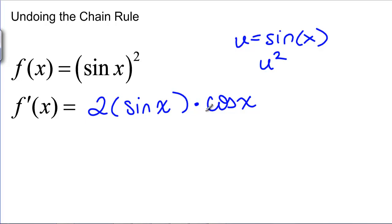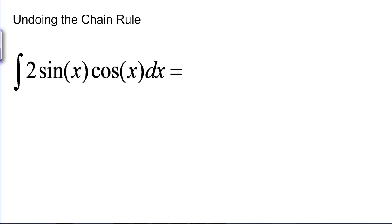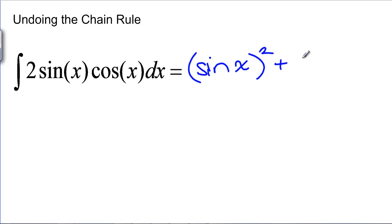We can write this in shorthand to help us remember: if we're calling our inside function U, we can write this derivative as 2U times the derivative of U. What does that mean for us trying to find integrals? That means we can now find the antiderivative of 2 sine of X cosine of X. We took the derivative of sine of X squared and got that, so the antiderivative of 2 sine of X cosine of X must be sine of X squared plus C, some constant.